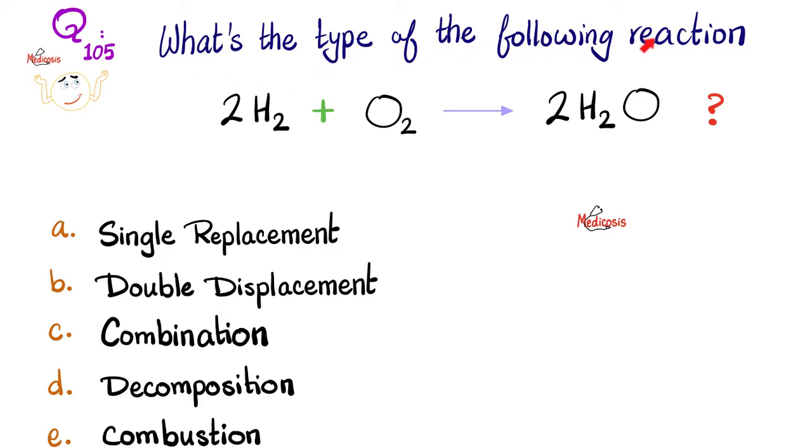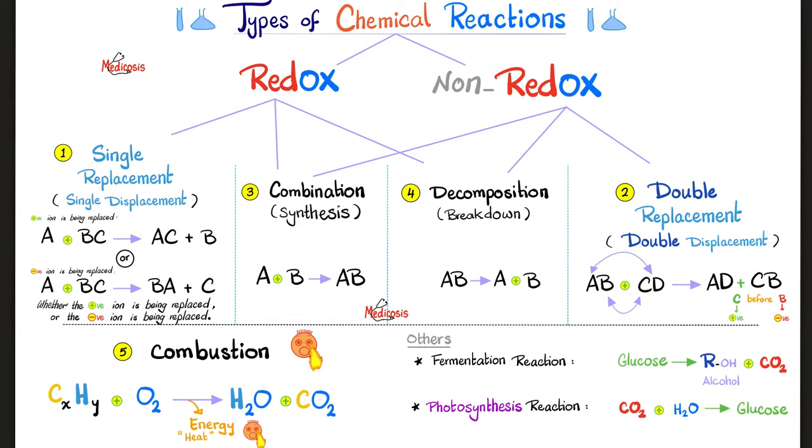More questions. What's the type of the following reaction? Please pause. What do you think? Well, I'm adding a plus b to give me a b. So this is a classic combination or synthesis reaction. If you didn't get this right, there is no hope for you. I mean, try and try again. Look at this. A plus b equals a b. Combination or synthesis.